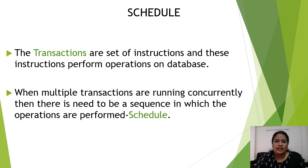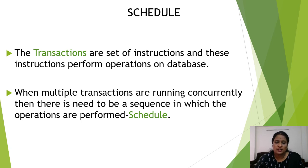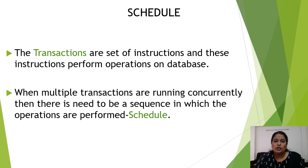Schedule. We have seen in the last video that a set of instructions can be called as programs in programming languages like C, C++, and Java. The same set of instructions can be called as Process, Job, or Thread in Operating System concept. Likewise, in DBMS concept, we say this set of instructions as transactions. These transactions perform operations on the database. If only one transaction is running in a system, then we don't need to think about schedules. But when multiple transactions are running concurrently, there is a need for a sequence in which the operations are performed. This is called a Schedule, and it is needed in order to maintain the system in a consistent state.